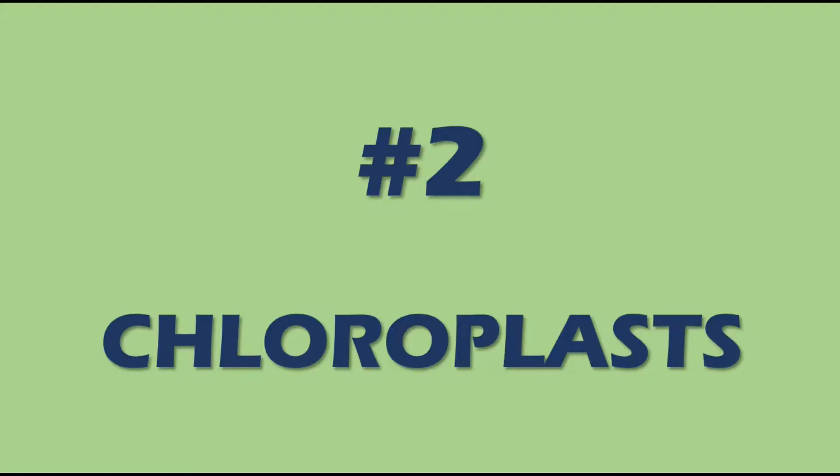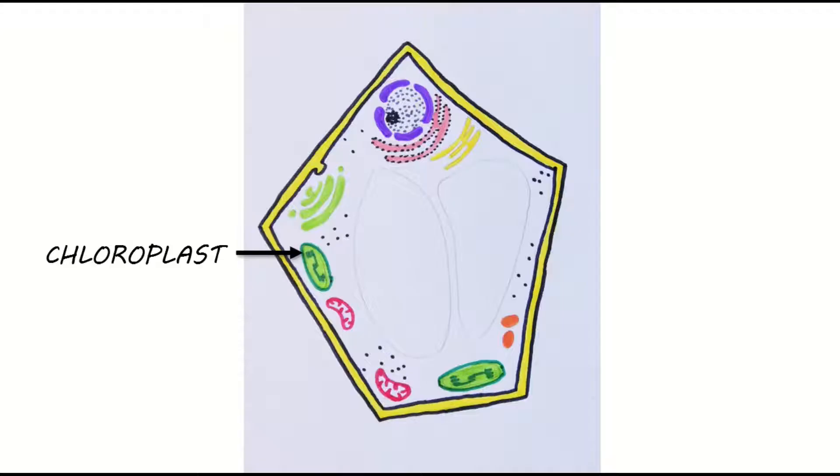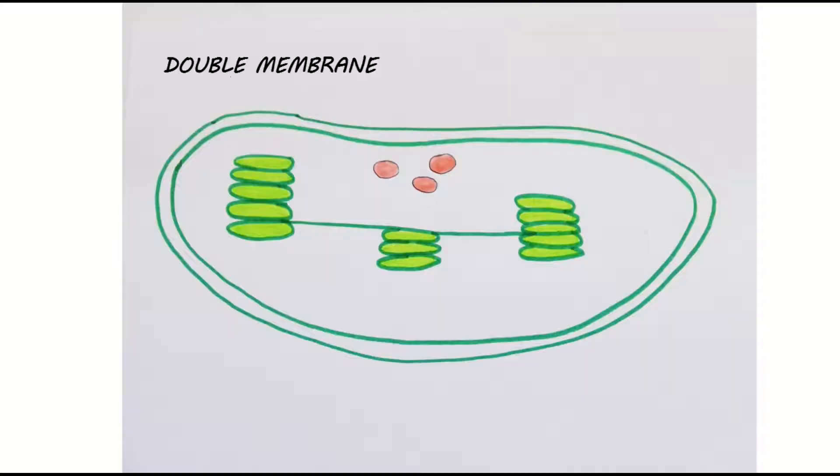Plant cells often contain chloroplasts. These are fairly large organelles with a double membrane just like the mitochondria and the nucleus. Inside a chloroplast is a liquid called the stroma which contains enzymes for photosynthesis. The stroma also contains membrane-bound discs called thylakoids. The thylakoid membranes contain lots of chlorophyll which is that green pigment that absorbs light energy for photosynthesis.